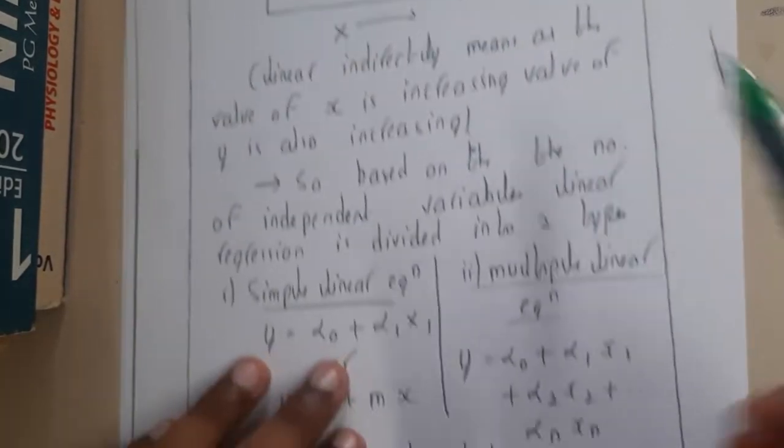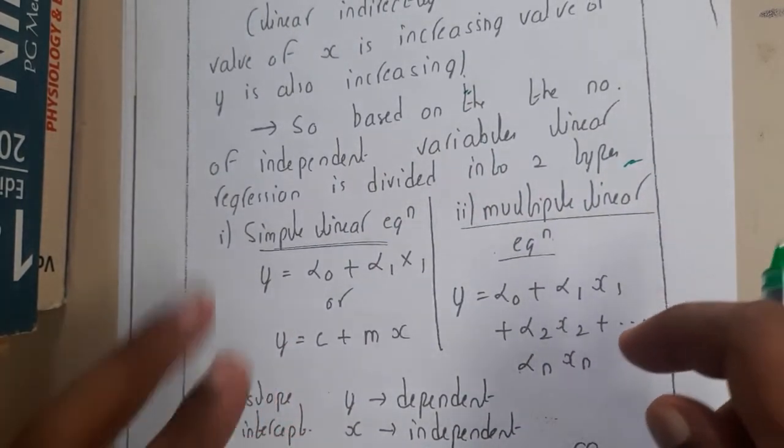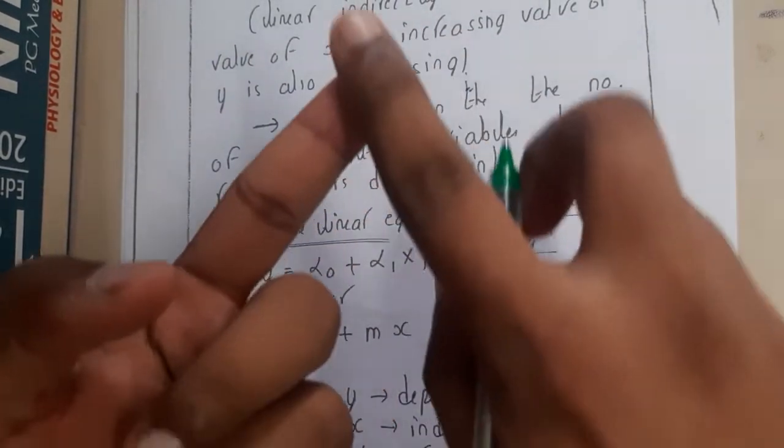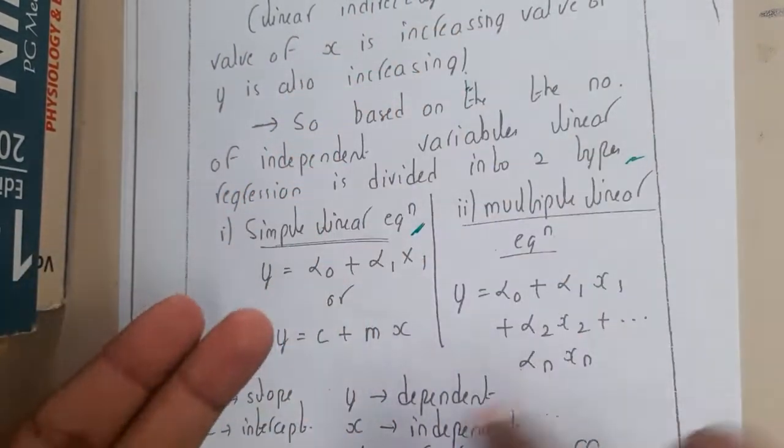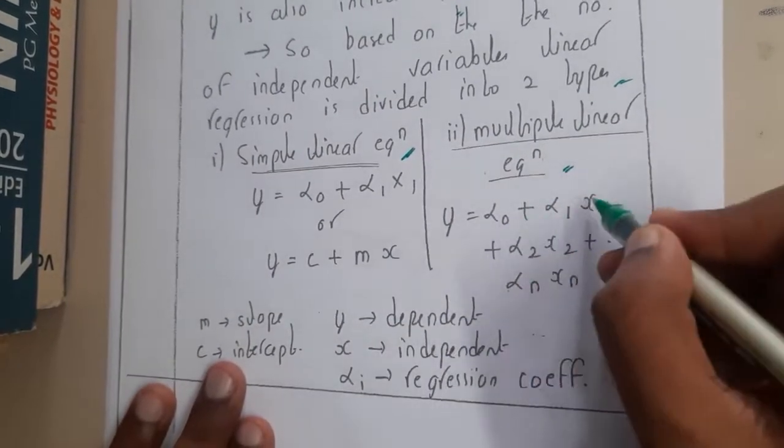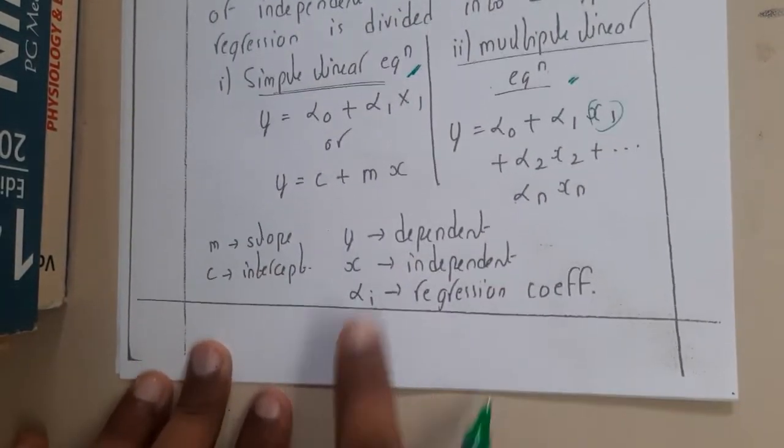Linearly indirect means as the value of x increases, the value of y also increases. Based on the number of independent variables, regression is divided into two types. If the number of inputs are two only, it's called simple linear regression because using one you're predicting the other. If you have multiple inputs, it's called multi-linear regression.